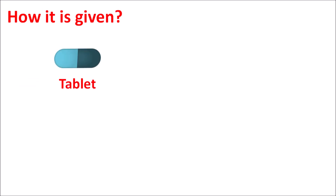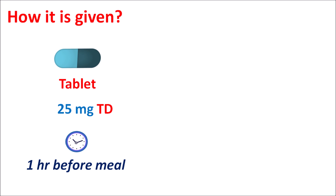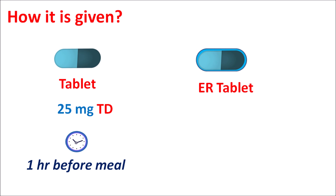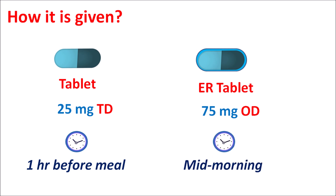How is it given? This drug is available as a normal immediate-release tablet at a strength of 25 mg. It is given as three tablets — 25 mg thrice daily — so the total daily dose is 75 mg. Diethylpropion should be given one hour before the meal in order to reduce appetite and food intake. This drug is also available as an extended-release tablet at a strength of 75 mg, given as one tablet per day. The extended-release tablet is given in the mid-morning in order to reduce appetite and thereby reduce food intake.